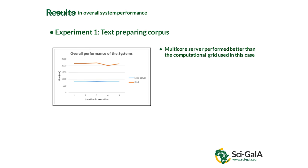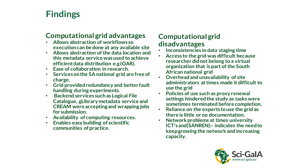In our second scenario the multi-core server also performed around two times better than the computational grid. We expected from the start that the multi-core server would outperform the grid because that machine is purpose-built for processing. But we also wanted to find out what other lessons we could learn from the process and what positive takeaways there were. We found many advantages on each system — comparing them is like comparing apples and oranges.